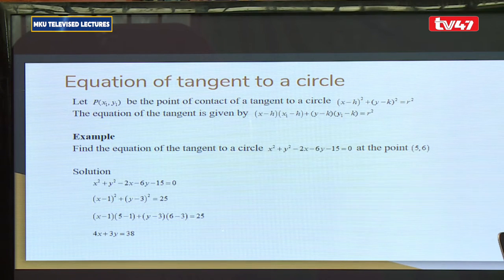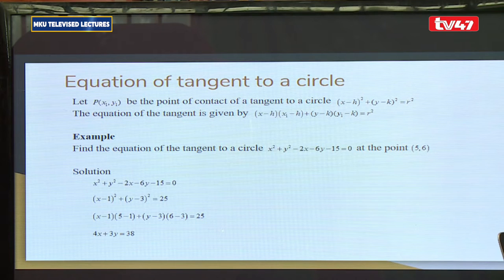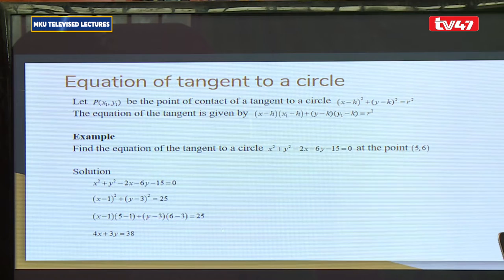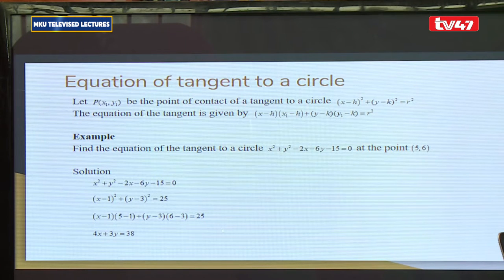For the equation of a tangent to a circle at a point of contact (x1, y1), with the circle centered at (H, K), the equation is: (x minus H)(x1 minus H) + (y minus K)(y1 minus K) = R squared. Example: given a circle and point of contact (5, 6), express the circle in standard form as (x-1)² + (y-3)² = 25, then substitute x1=5, y1=6 to get 4x + 3y = 38.